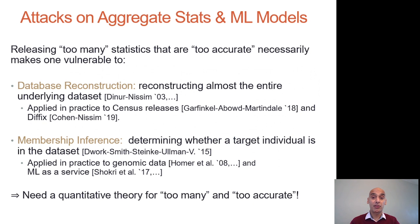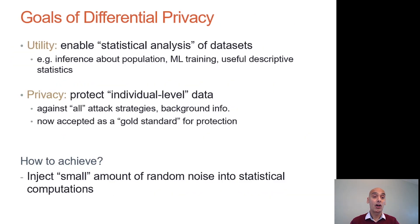What's the message from all this? It's not that all statistical releases are always dangerous, but rather we need a quantitative theory to tell us how much is too much — how to ensure that we are not publishing too much statistical information too accurately, and be sure that it can't be combined to yield such attacks.